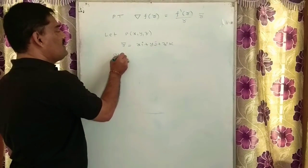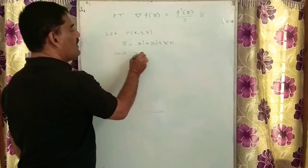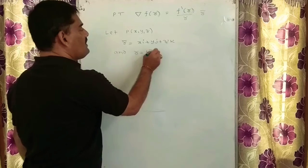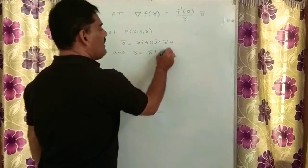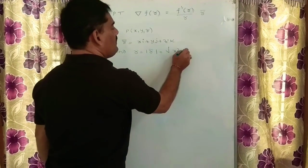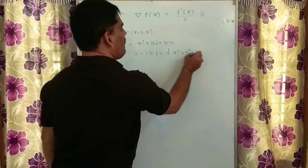And corresponding to this, you are going to define r which is the modulus of r bar. So directly I am writing here x square plus y square plus z square.